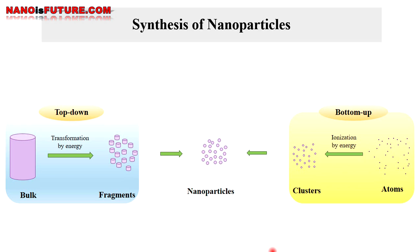A simple way to illustrate a top-down method is to think of carving a statue out of a large block of marble. Bottom-up methods work in the opposite direction — the nanomaterial, such as a nano coating, is obtained starting from atomic or molecular precursors and gradually assembling it until the desired structure is formed. This method resembles building with bricks.